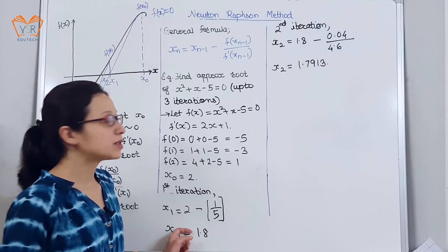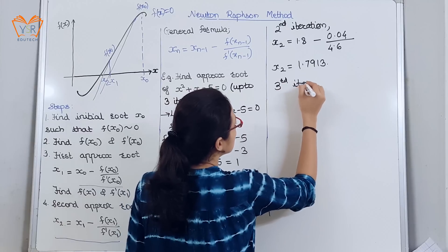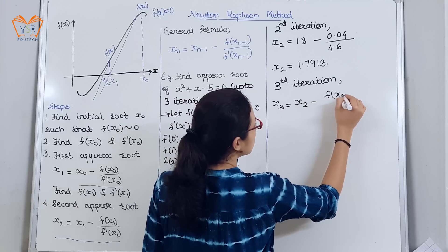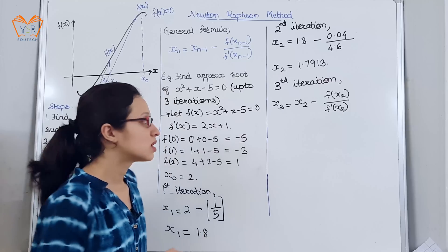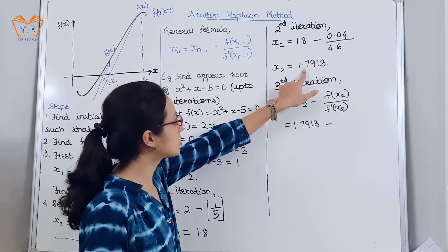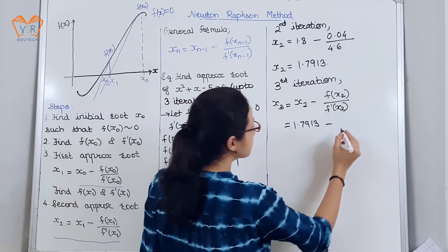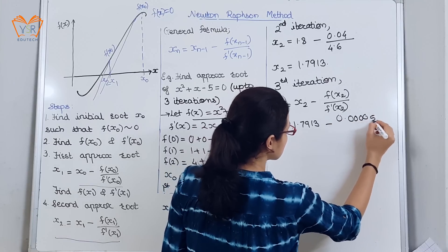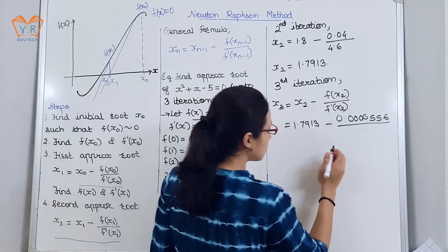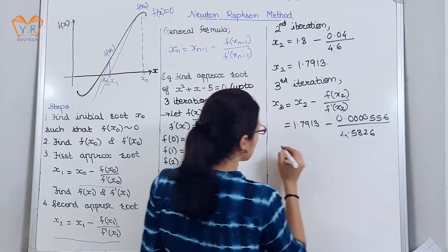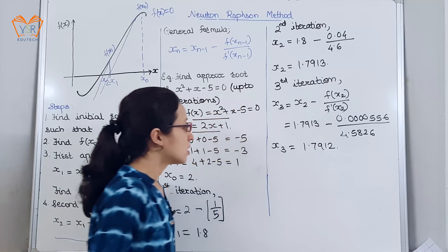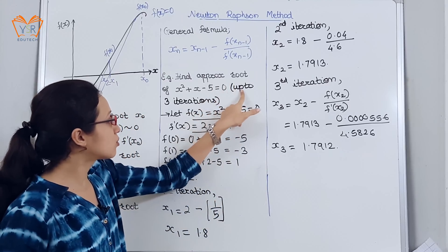So x₂ = 1.7913 is the second approximate root. For the third approximate root (third iteration): x₃ = x₂ − f(x₂)/f'(x₂). With x₂ = 1.7913, substituting into f(x) and f'(x) gives f'(x₂) = 4.5826. Solving, x₃ = 1.7912. We stop here because the question asked for three iterations.